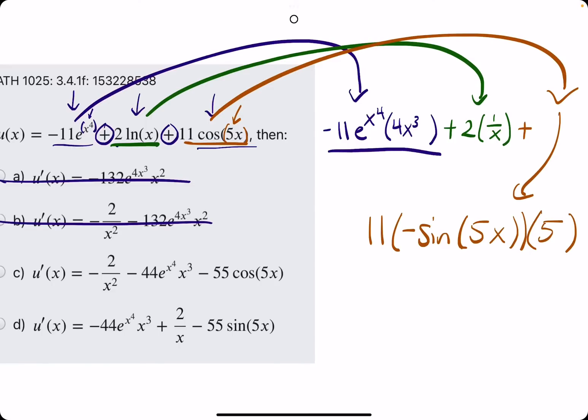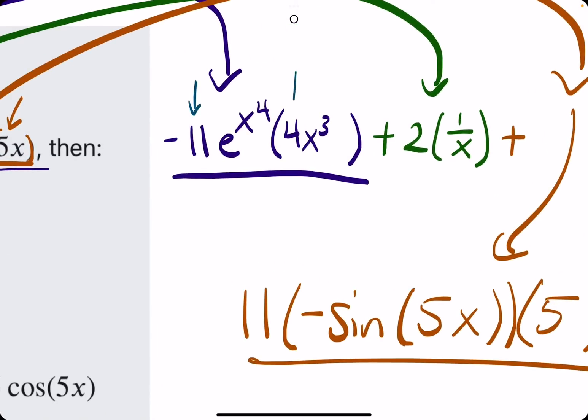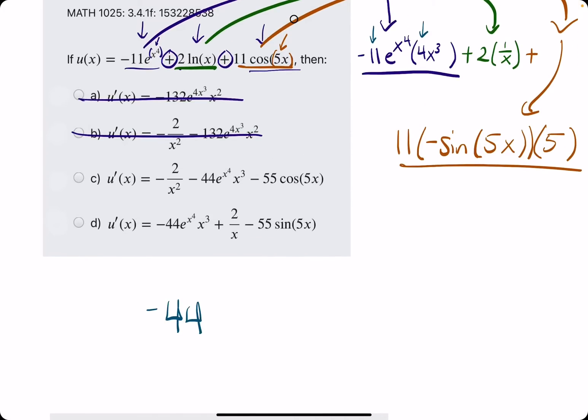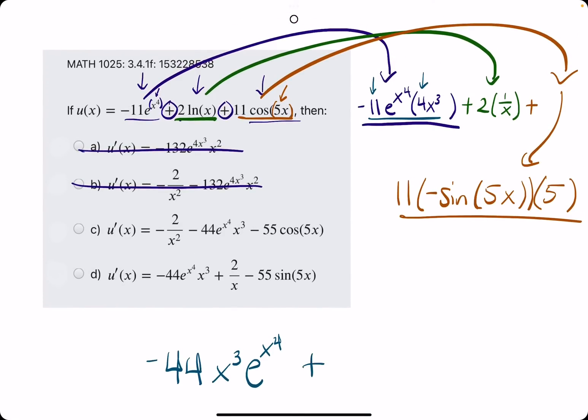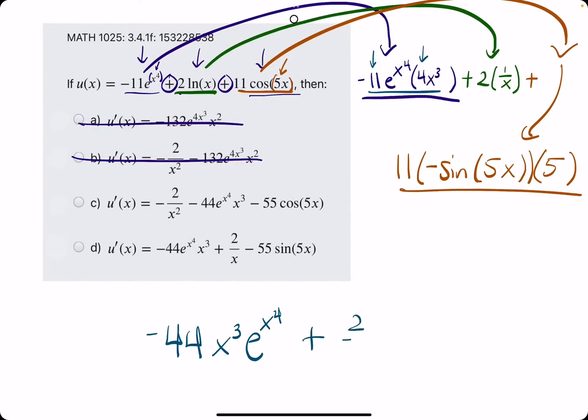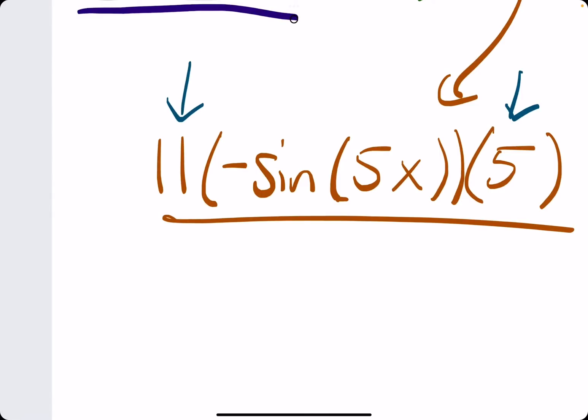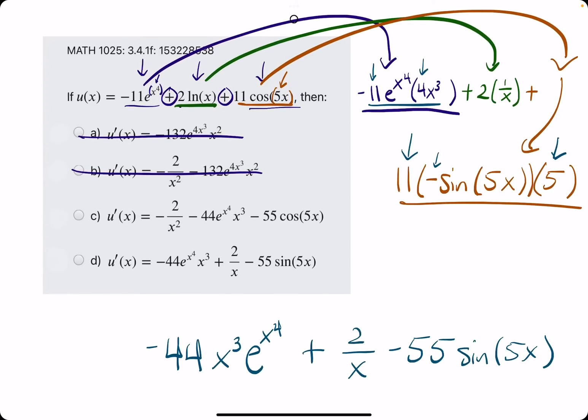So, we have our three pieces. What we want to do first, maybe, is go ahead and rewrite these with multiplying any like terms that we can. So, negative 11 times 4 would be negative 44. We can leave the x cubed in the mix, and then we can leave e to the x to the 4th in the mix. So, all these terms have been accounted for here. For the second term, we have a positive 2 times 1 over x. When we multiply those, the 2 can just multiply up to the 1. And so, we have 2 over x. For the last term, we have 11 times 5. And there's a negative in the mix. So, I'll call it negative 55 when we multiply them all. And then sine of 5x.